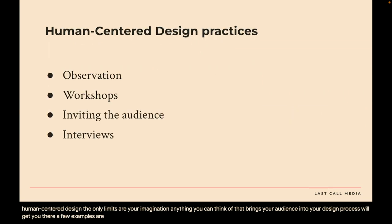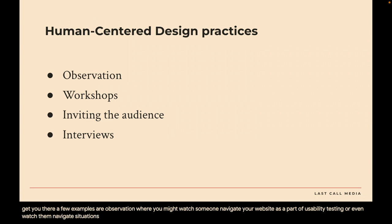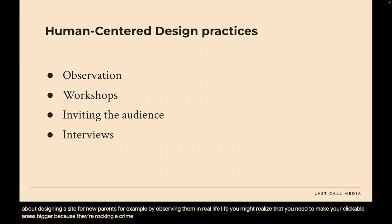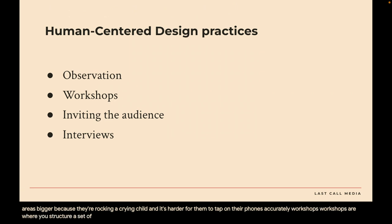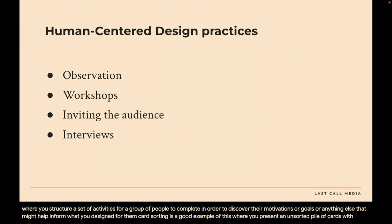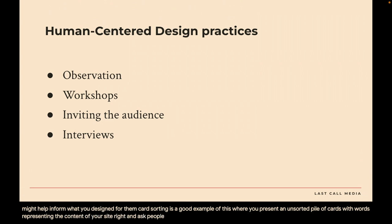A few examples are observation, where you might watch someone navigate your website as part of usability testing, or even watch them navigate situations in their real life that your site is meant to assist with or address. That might sound a little crazy, but if you think about designing a site for new parents, by observing them in real life, you might realize you need to make your clickable areas bigger because they're rocking a crying child and it's harder for them to tap on their phones accurately. Workshops are where you structure a set of activities for a group of people to complete in order to discover their motivations or goals — card sorting is a good example, where you present an unsorted pile of cards with words representing the content of your site and ask people to sort them into categories so you can base the structure and navigation on how they think about the content.